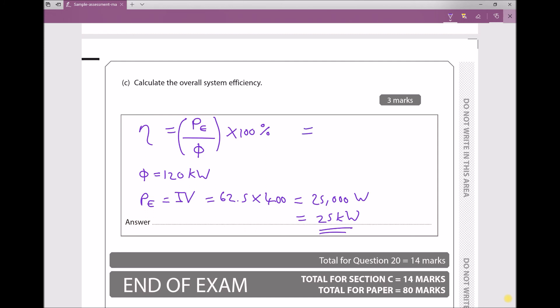If we go back to our efficiency line then, our efficiency is our electrical power, 25 in kilowatts, divided by our heat energy in, 120 in kilowatts, times 100%. Therefore the overall efficiency is 20.8%. And that brings us to the end of the mock assessment.